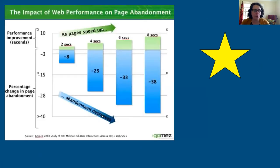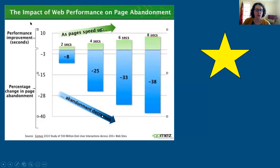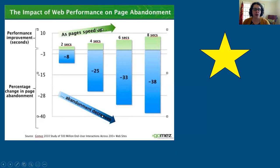This is another example of a good graph. Again, you only have a couple of different colors and it's very easy to see what each color refers to. Because they understand that experts in web design may immediately tell what's going on but others may not, they've helpfully added little arrows that say "as pages speed up, abandonment decreases." So they add right into the graph a very quick and simple declarative statement about what the graph is showing for people who are not experts in this area.